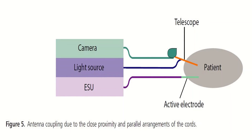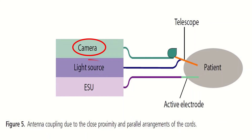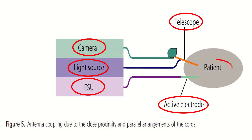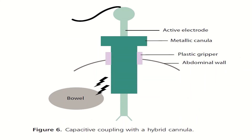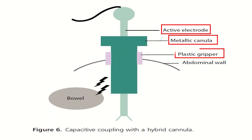A figure shows antenna coupling due to close proximity and parallel arrangement of cords, including the camera, light source, ESU, telescope, active electrode, and patient. Another figure shows capacitative coupling with a hybrid cannula, illustrating the active electrode, metallic cannula, plastic gripper, the patient's abdominal wall, the bowel, and the passage of electric current.